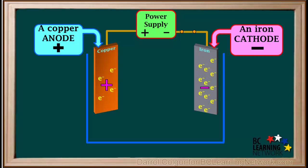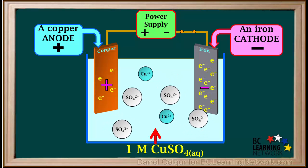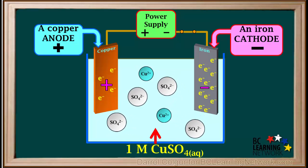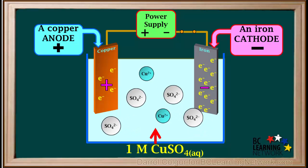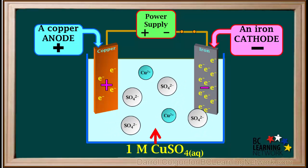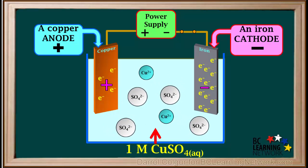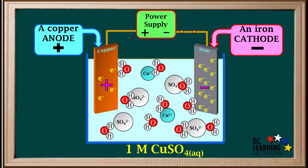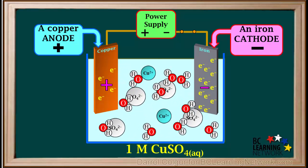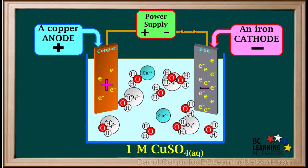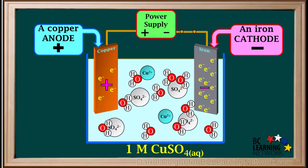We'll simplify the electron symbols on the electrodes. And we'll add a 1 molar copper 2 sulfate solution to the container. The copper and the sulfate ions are moving randomly in the solution. But this solution is aqueous, so we can also show some of the water molecules present.